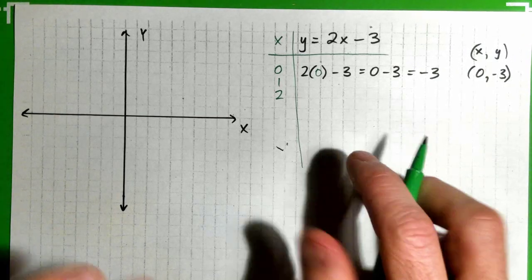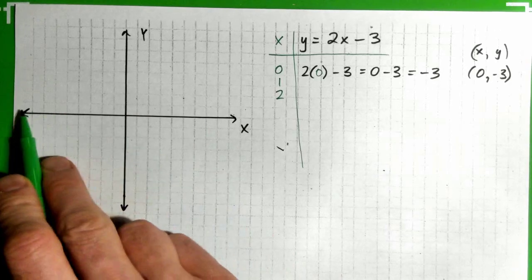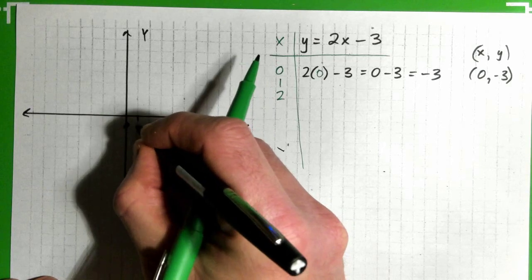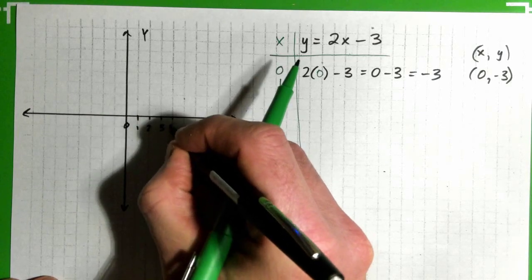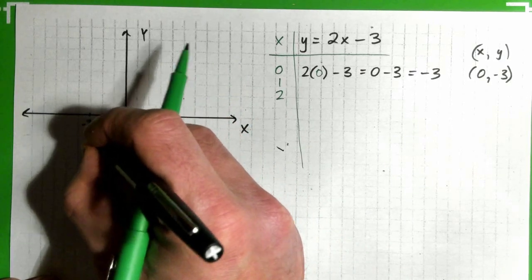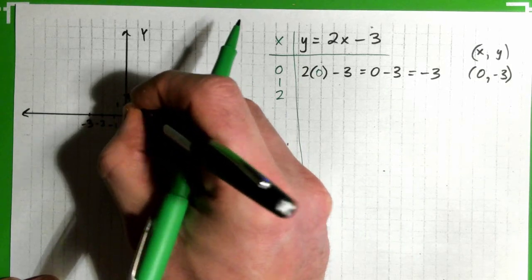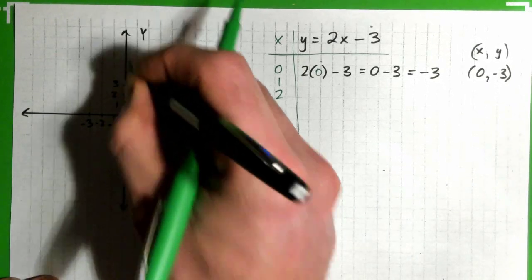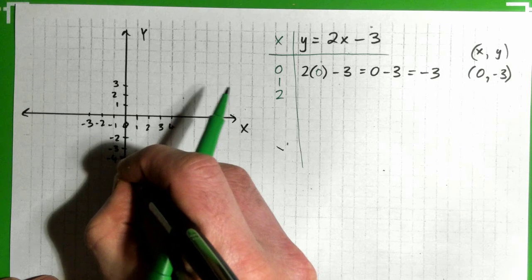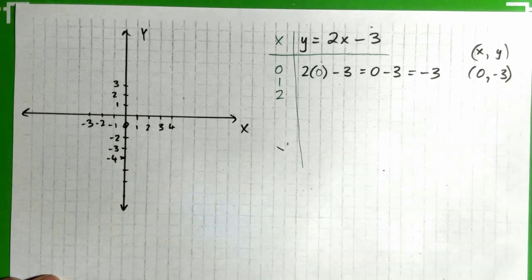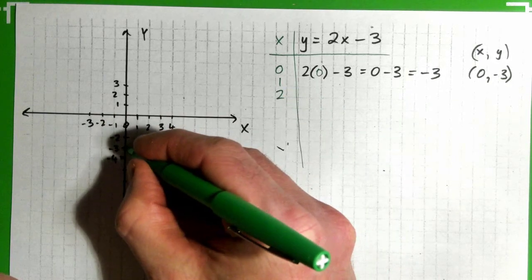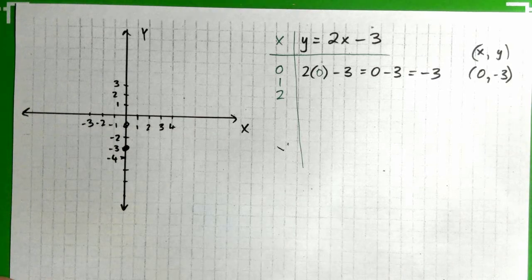We can put that on the graph. The x-axis goes 0, 1, 2, 3, 4 and also negative 1, negative 2, negative 3. The y-axis goes 1, 2, 3, 4, 5 and negative 1, negative 2, negative 3, negative 4, negative 5. So the point (0, -3) is where x is 0 but y is negative 3 — that point right there.